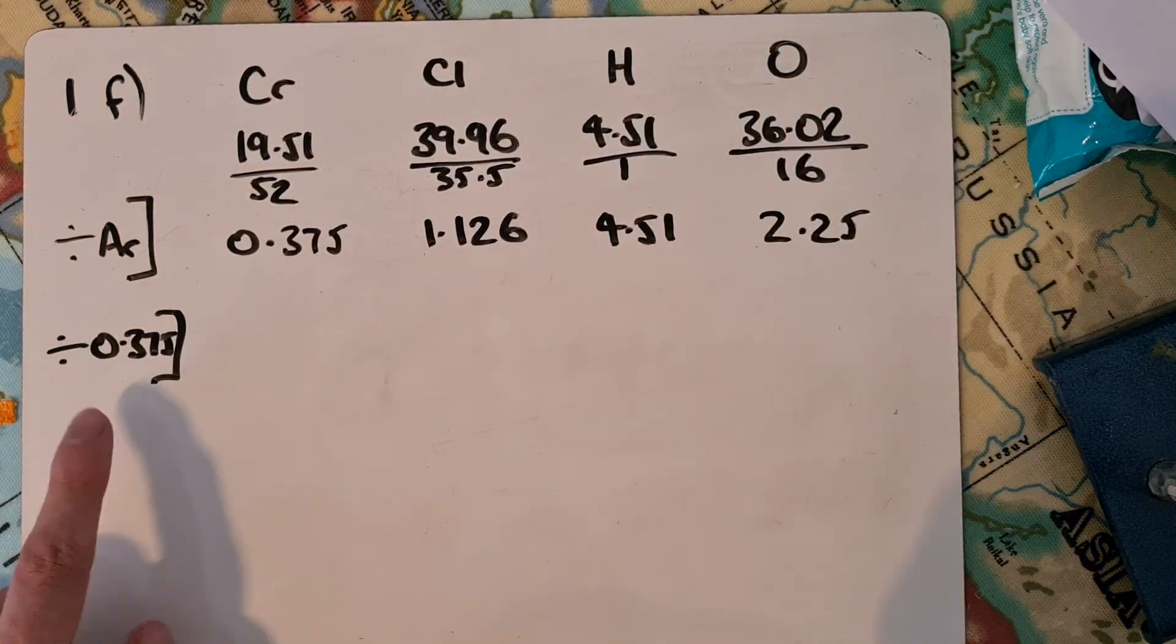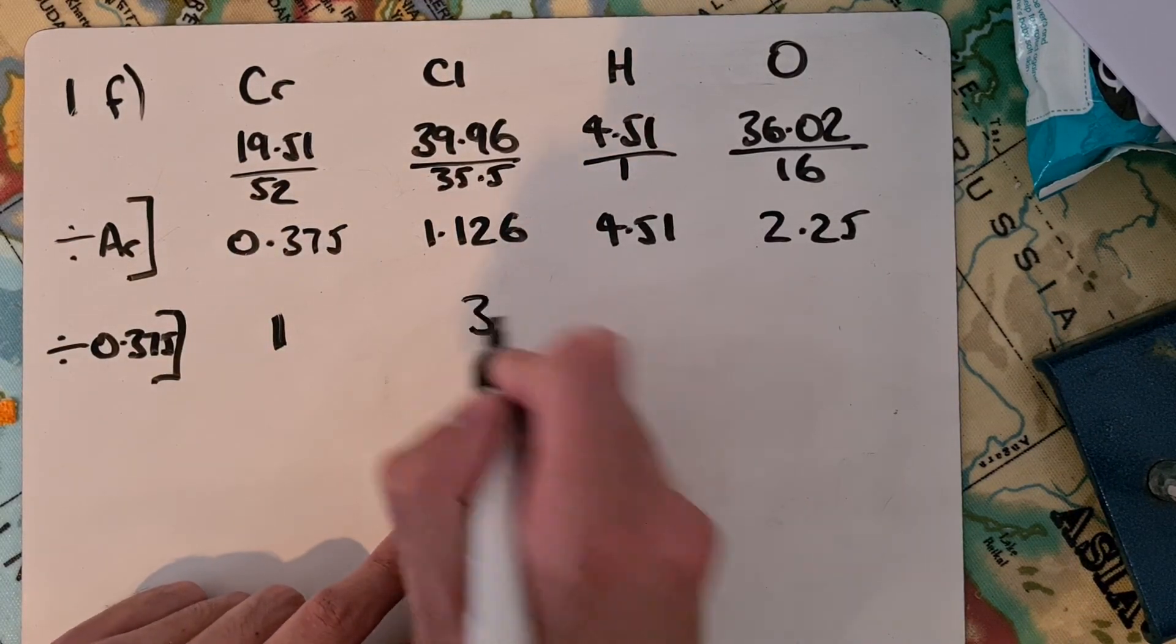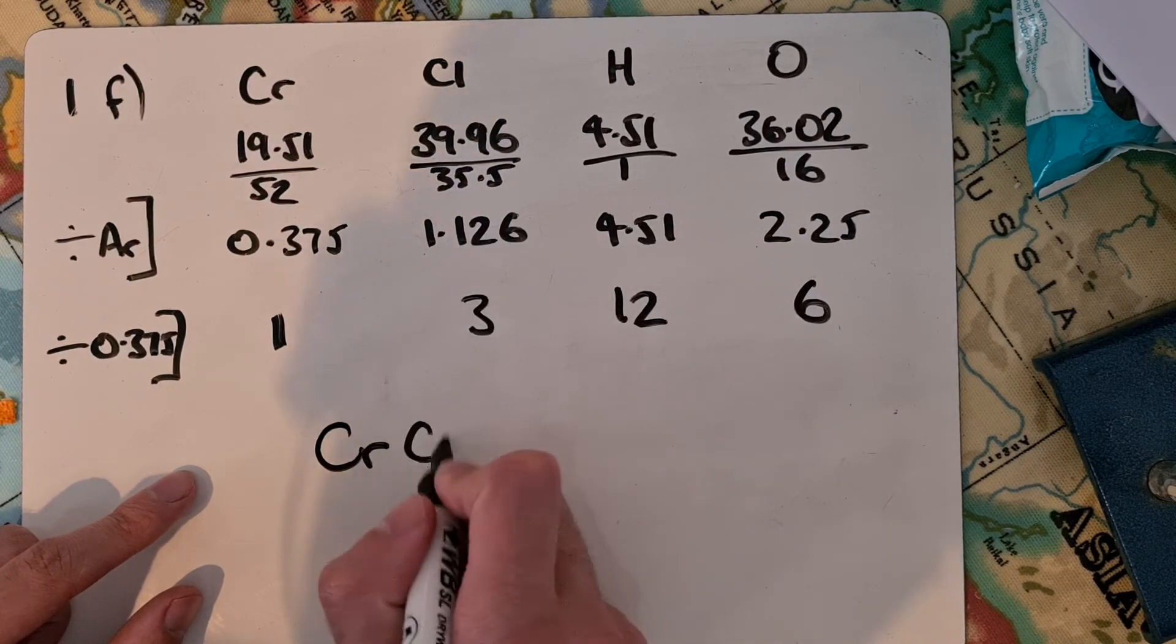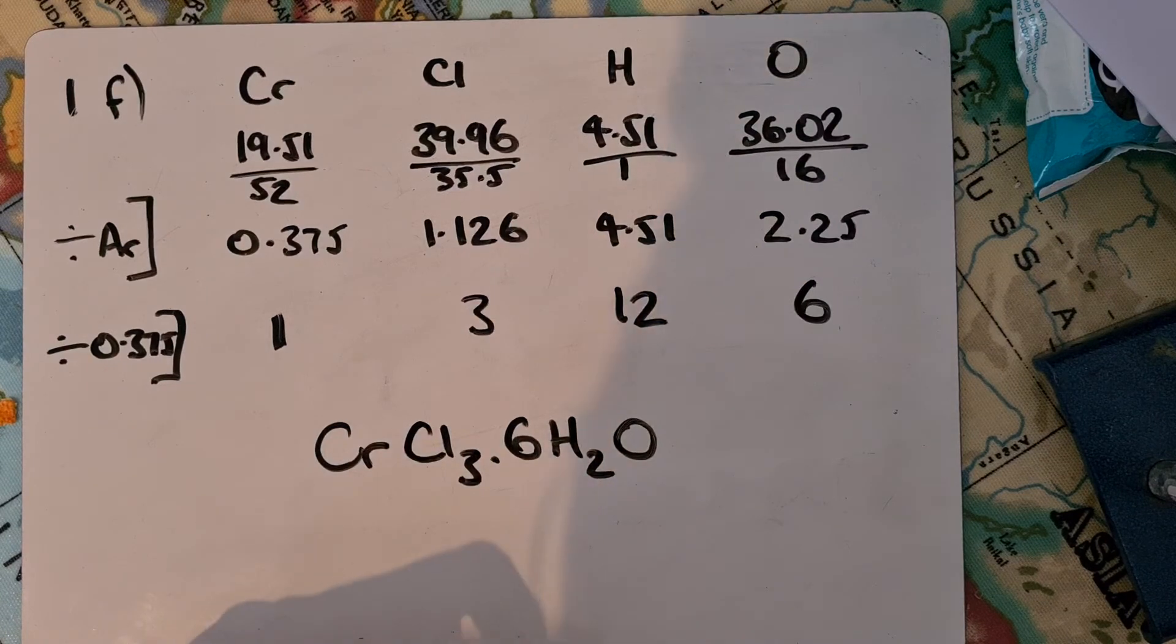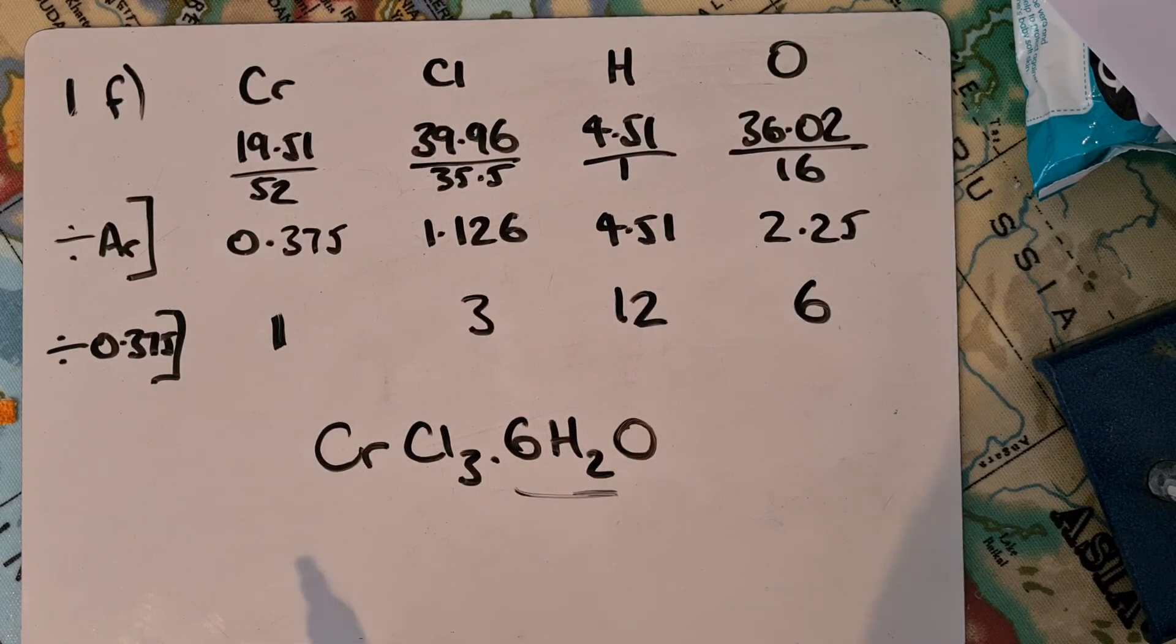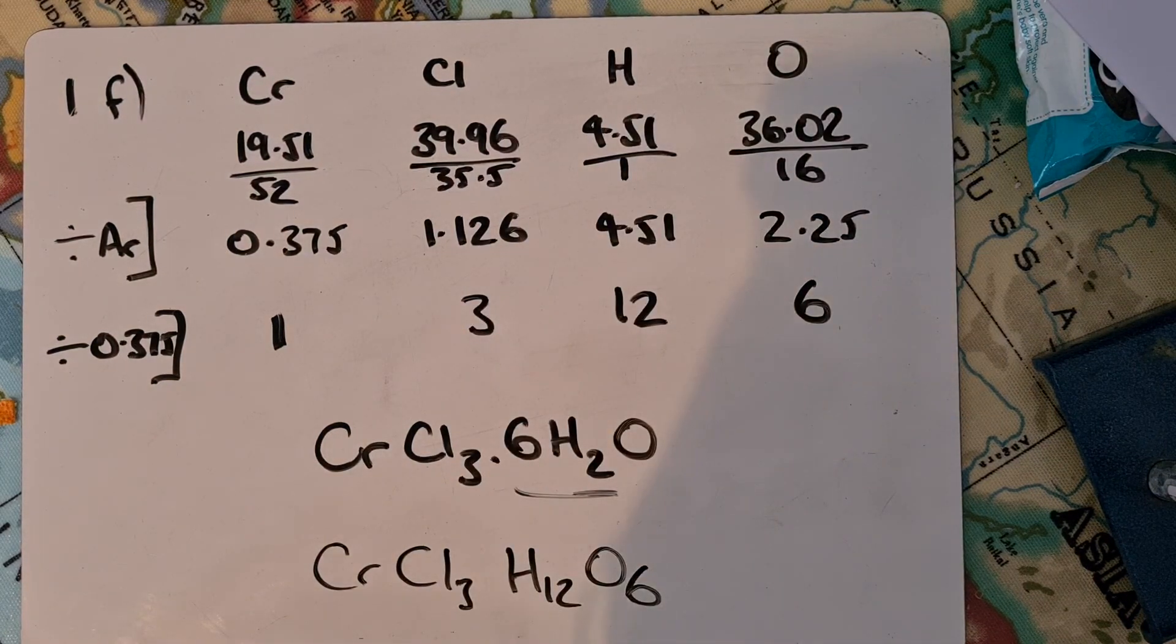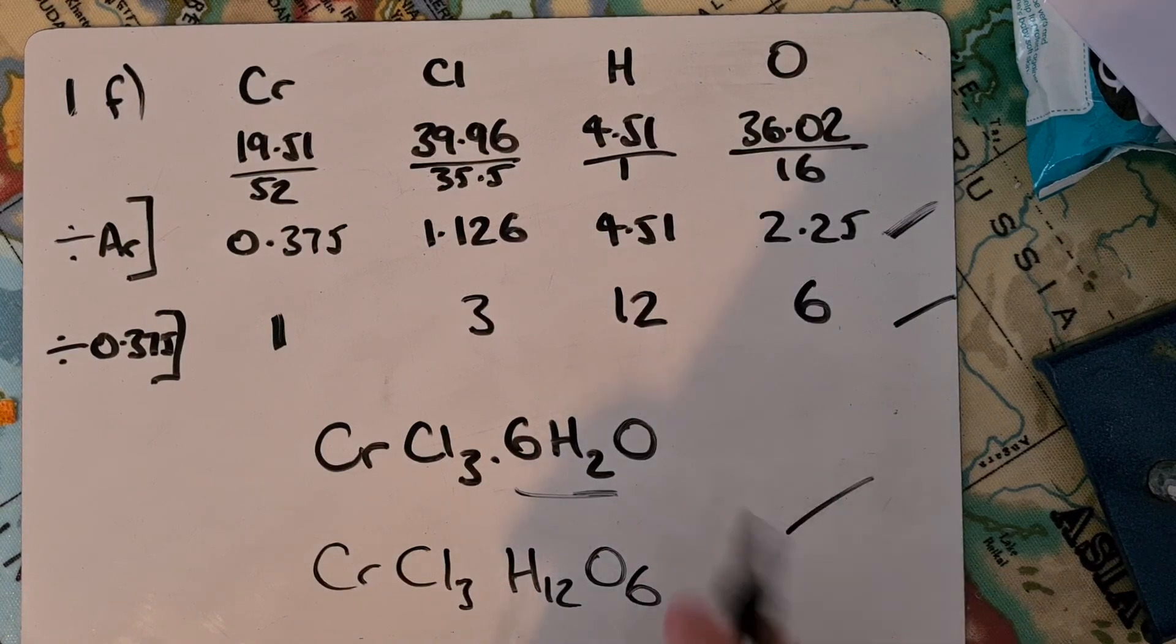Next, divide by the smallest, which is 0.375. Each number gets divided by this to get the ratio: 1, then 3, then 12, then 6. So our empirical formula is CrCl3·6H2O or 12H6O. Since it's a hydrated salt, we can put the hydrated water in. You would have got marks for CrCl3H12O6 instead. Either was fine. You got one mark for the first row, one for the second row, and one for either of these formulas.